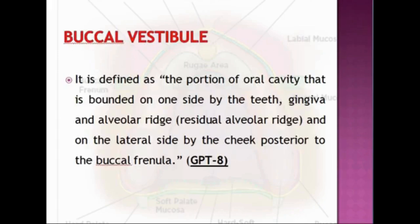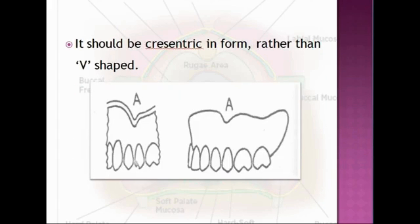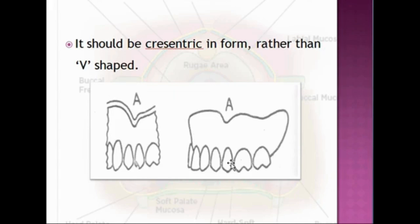Another clinical significance is that the buccal frenum acts as a valuable guide in the selection of teeth, as the canine eminence is lost in most cases after extraction. The distance between the mesial side of one buccal frenum to the other is equal to the combined width of the upper six anterior teeth, that is from canine to canine.